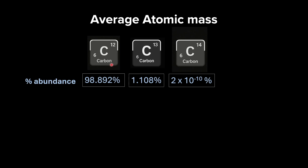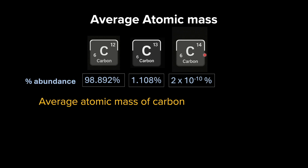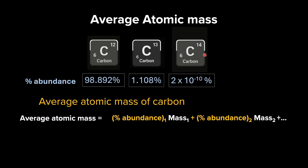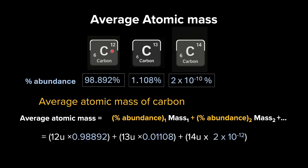Now, just like we found the average weight of a mango, let's find the average atomic mass of carbon. Carbon has three isotopes: carbon-12, carbon-13, and carbon-14. The percentage abundance of carbon-12 is 98.892%, carbon-13 is 1.108%, and carbon-14 is 2 × 10⁻¹⁰ — which is negligible, so we can ignore it in calculations. Carbon-14 is the radioactive isotope present in the least amount.